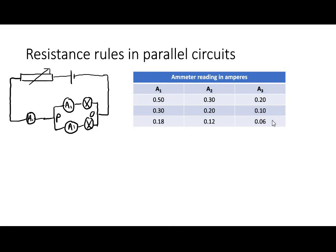Parallel circuits are a little bit more complex. We've got here our variable resistor, our battery or cell, and an ammeter reading A1. Then we've got a parallel branch — two branches running in parallel with two bulbs, A2 and A3. The first thing to notice is that the reading for A1 in each case is equal to A2 plus A3. The total current through the whole circuit is the sum of the currents through the separate branches.